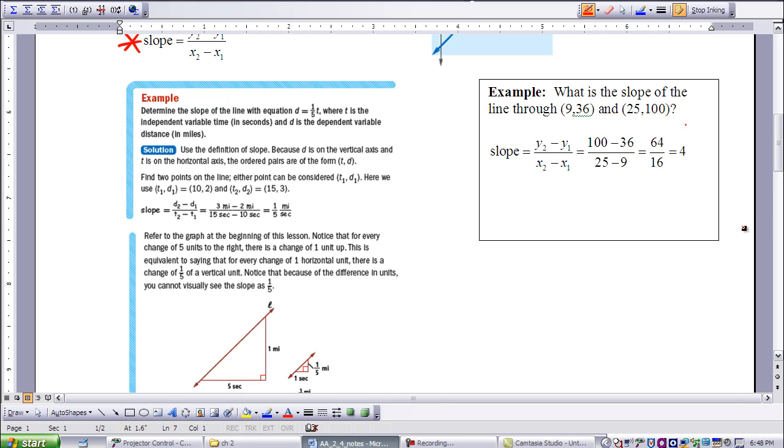If we take the change in Ys, 3 minus 2, and the change in Xs, 15 minus 10, gives me a change or gives me a slope of 1 over 5. So the rate of change between those two points on our graph was one-fifth.